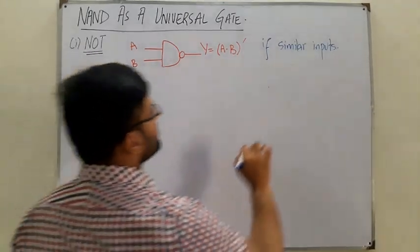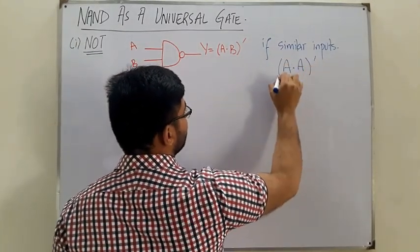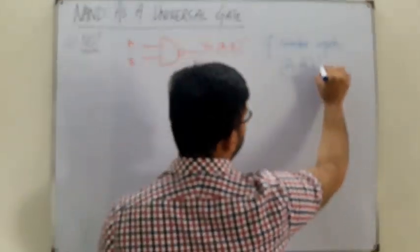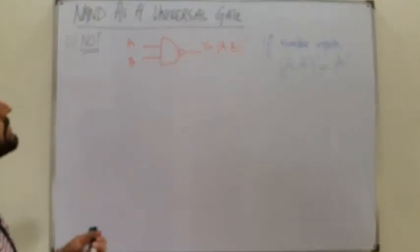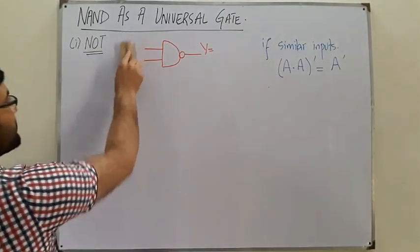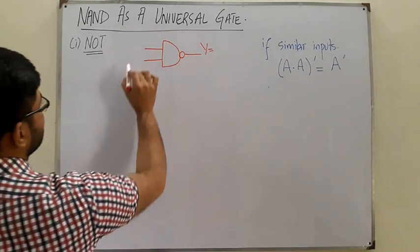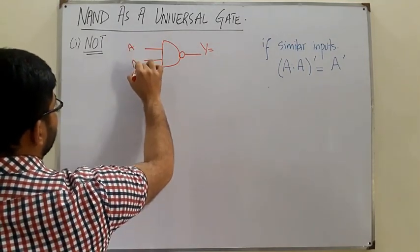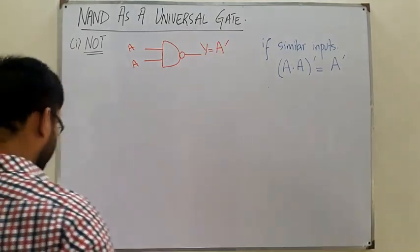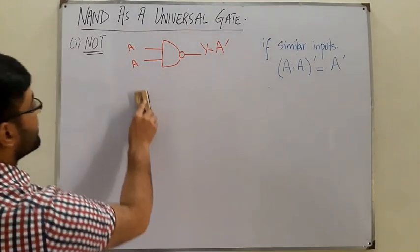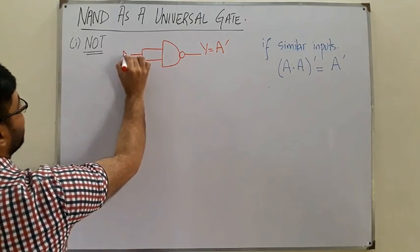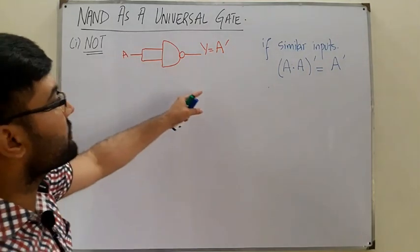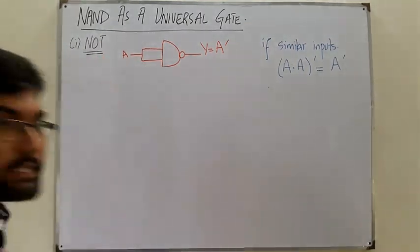If A is ANDed with A and then complemented, A AND A is just A, and then we take the complement, so we get A complement. This means the gate now acts as a NOT gate. The most precise way is to join the two inputs together and give it a single input A — it will give you the complement of A. That is how NAND is used to get a NOT operation.